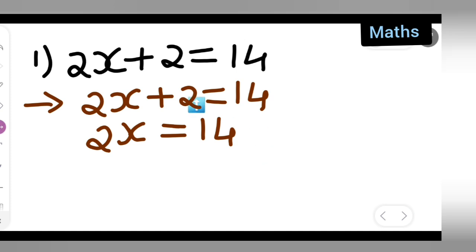Now what you're going to do is bring this 2 to the other side. So it will become minus 2. Here what you'll get is 2x equals 14 minus 2, which gives you 12.